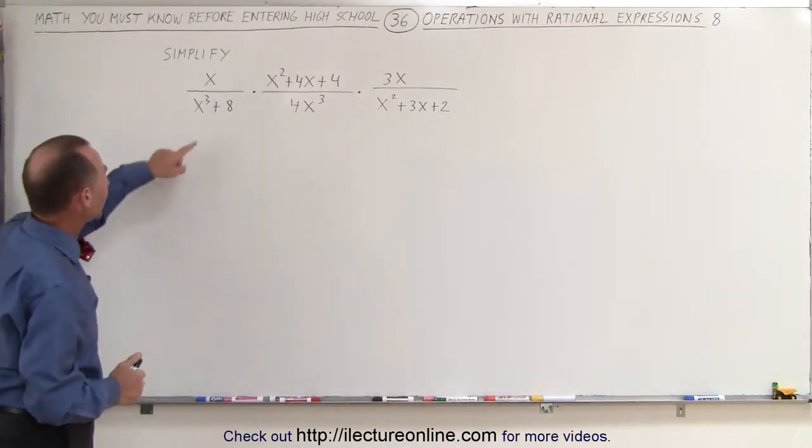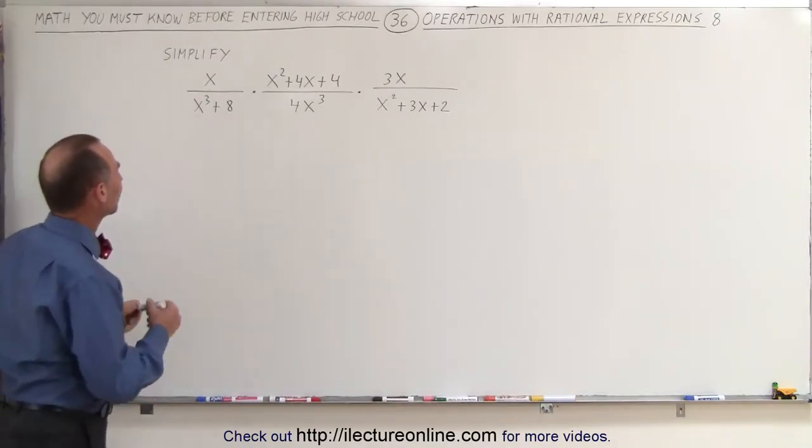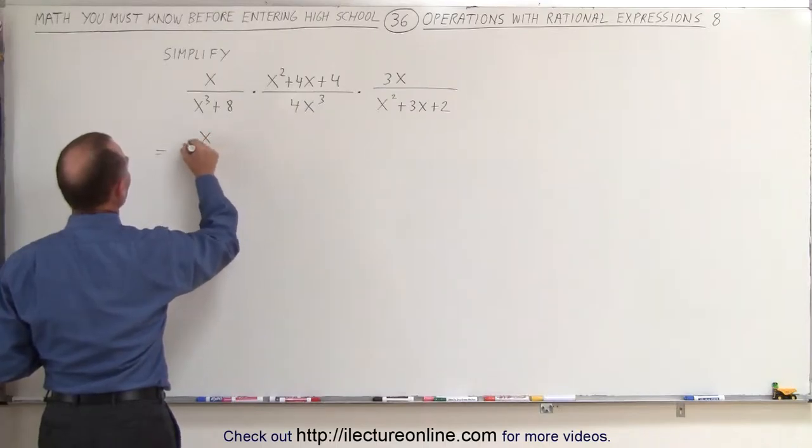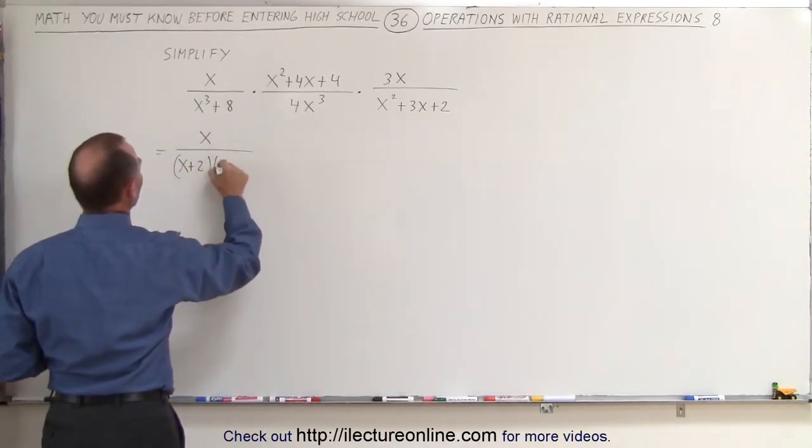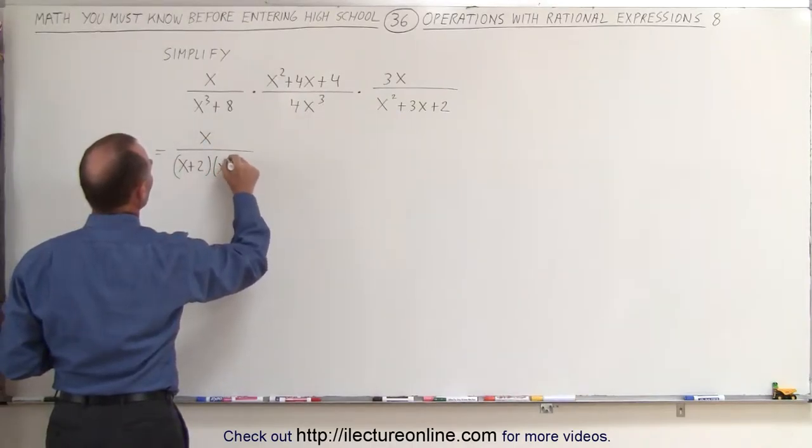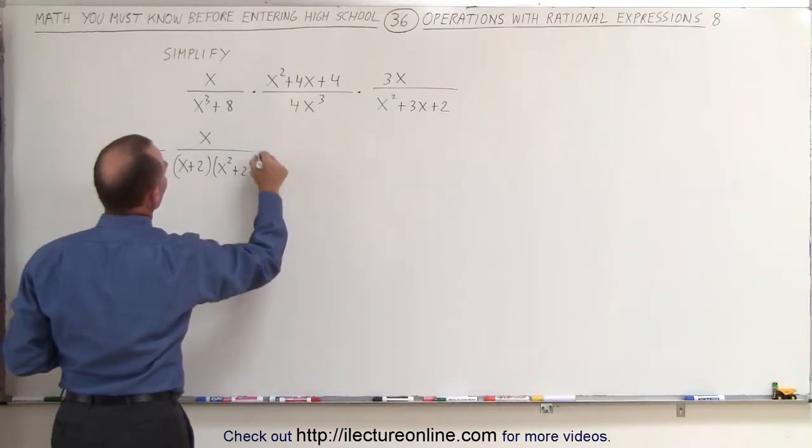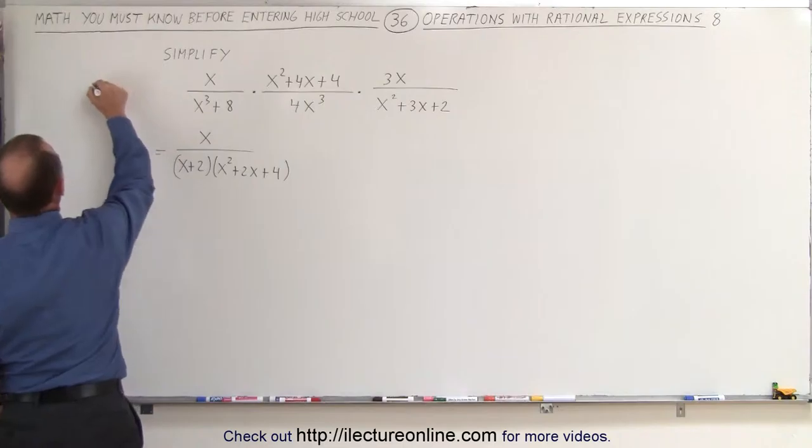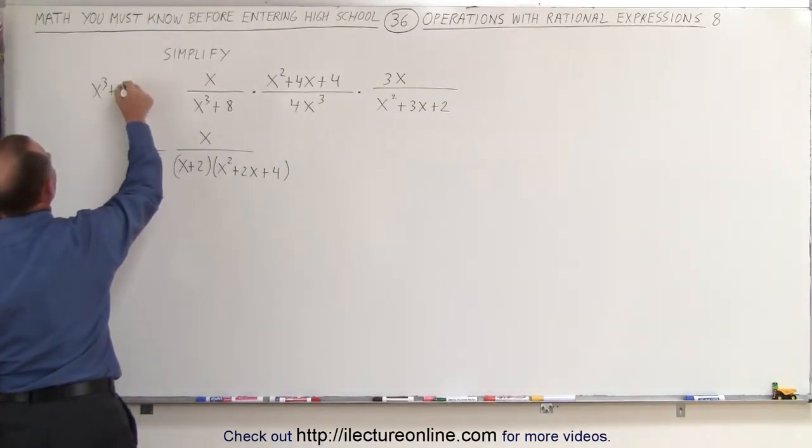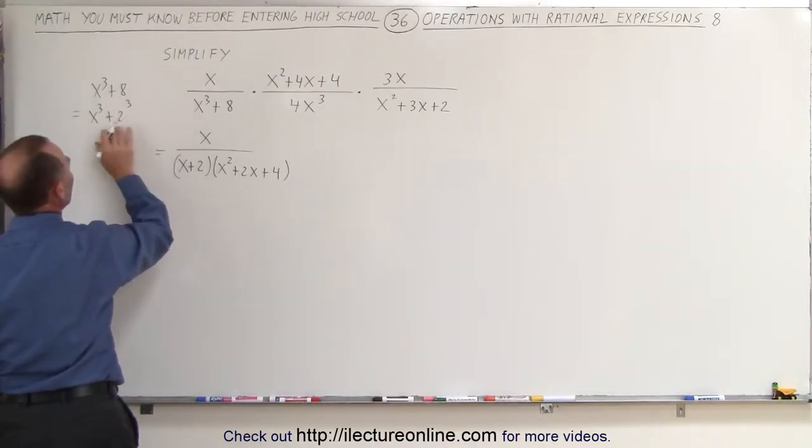So let's go ahead and do that. Here we can see that we have the sum of cubes. So let's factor this one first. This is equal to x times, we have x plus 2 times the first term squared, x squared, times the product of the two terms, that would be plus 2x, plus the last term squared, which would be 4. Because remember that x cubed plus 8 is the same as x cubed plus 2 cubed. This is a cube here, so you can see it's the sum of two cubes.